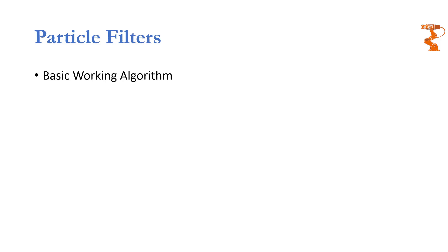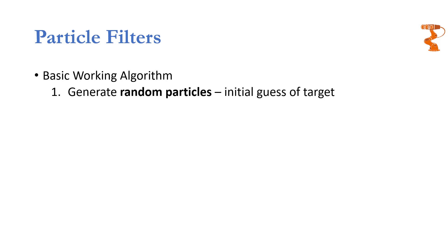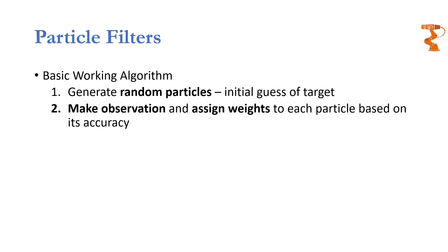I'll explain particle filters through an example, but before that, here's a summary of the basic working algorithm. The first step is to initially make a guess about what you want to know. This guess might be a random one or based on any prior information, which if available, makes the guess a targeted one. The next step is to observe the quantity that has some relation to what we want to know. Based on the observation, your initial guess will be rated. Those guesses which are far from your observed quantity shall be assigned minimum weight, while those guesses which look promising shall be given more weightage.